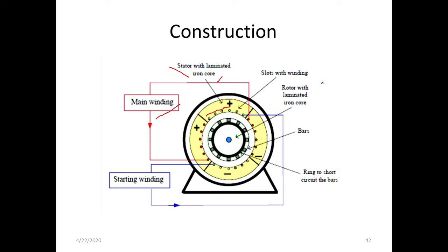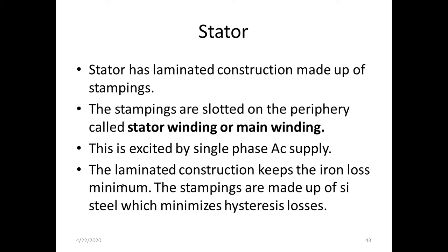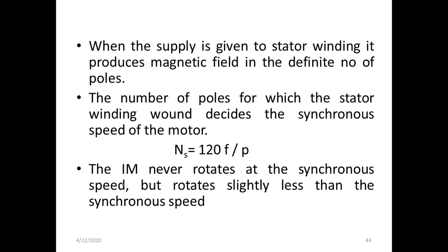The stator has windings with laminated core, and the rotor has iron bars and end rings to short circuit the bars. The stator slots have windings and here we have two windings: main winding and starting winding. The stator explanation is given with enough points for preliminary understanding of how it is made up and what kind of supply the stator receives, and the speed characteristics showing it never rotates at synchronous speed but slightly less.